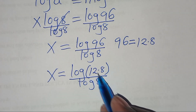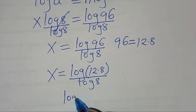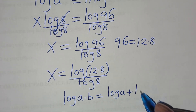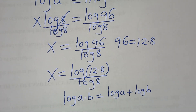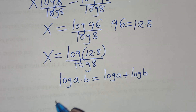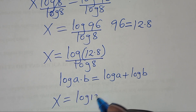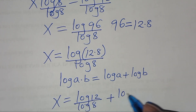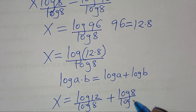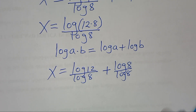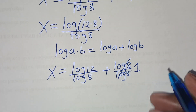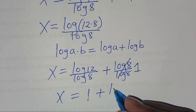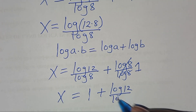Now log(12 × 8) is in the form log(a × b), which we can express as log(a) + log(b). Applying this logarithm property, x equals log(12)/log(8) plus log(8)/log(8). Since log(8)/log(8) simplifies to 1, x equals 1 plus log(12)/log(8).